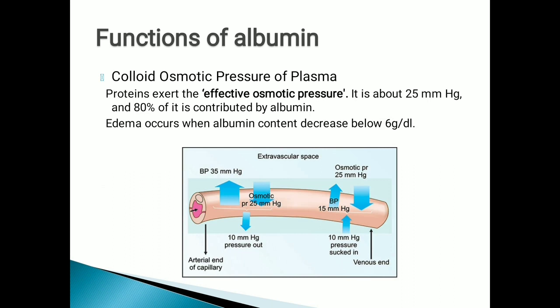Functions of albumin: Protein exerts effective osmotic pressure of 25 mmHg at both arterial and venous ends, which remains the same, whereas hydrostatic pressure is 35 mmHg at the arterial end and 15 mmHg at the venous end. The net 10 mmHg is the same everywhere for blood to flow inside the vessel and not leak out. Edema occurs when the albumin content goes below 2 gram per deciliter.